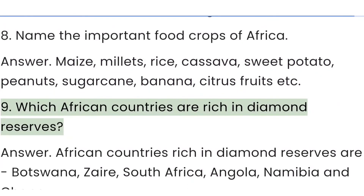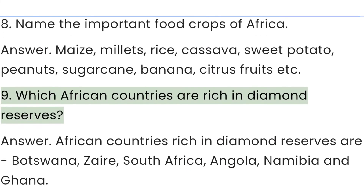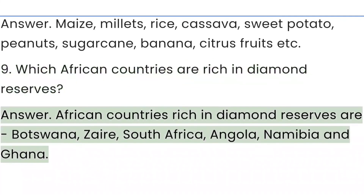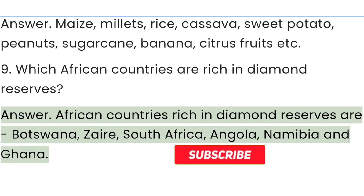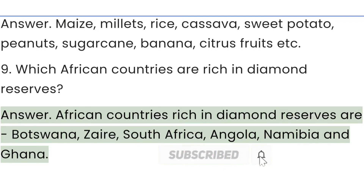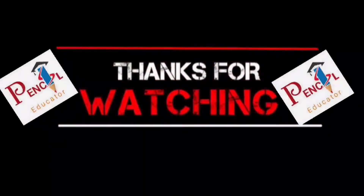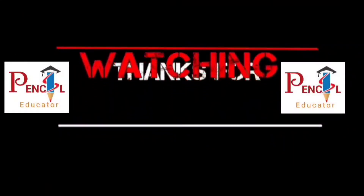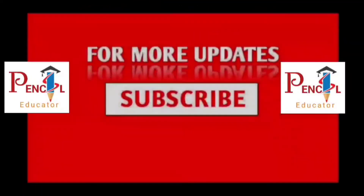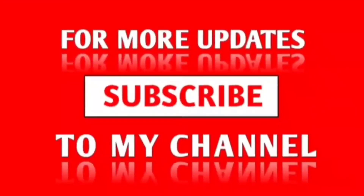Question 9: Which African countries are rich in diamond reserves? Answer: African countries rich in diamond reserves are Botswana, Zambia, South Africa, Angola, Namibia, and Ghana. If you like this video, please subscribe to the channel, like, comment, and share with your friends. Thank you for watching.